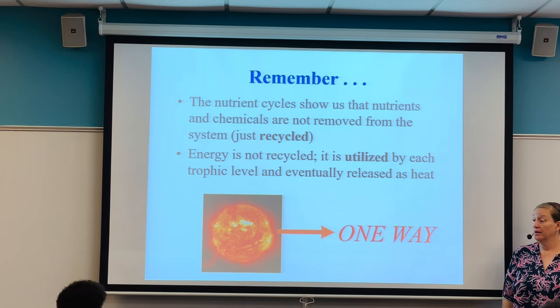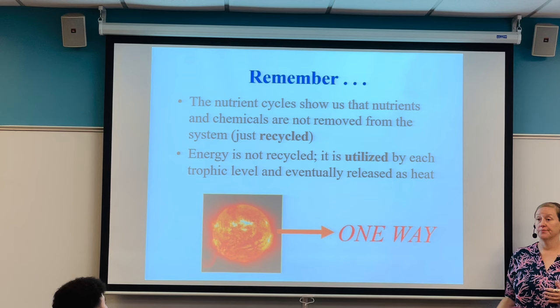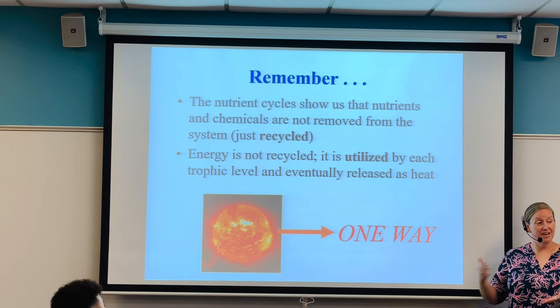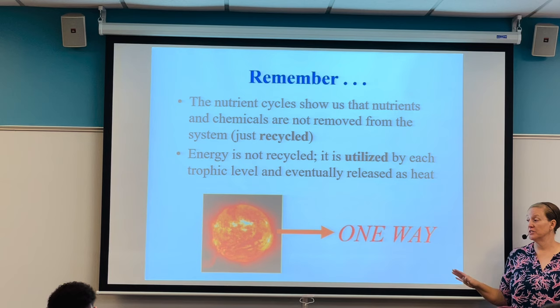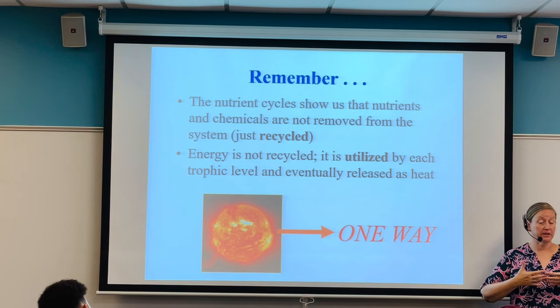Energy is how atoms come together in bonds — bonds are energy, and energy has to keep being remade. We need renewable sources of energy like sunlight. Sunlight is a big driver in creating food for the trophic levels and passing energy and nutrients to the detritivores and decomposers, which bring nutrients back into the system.